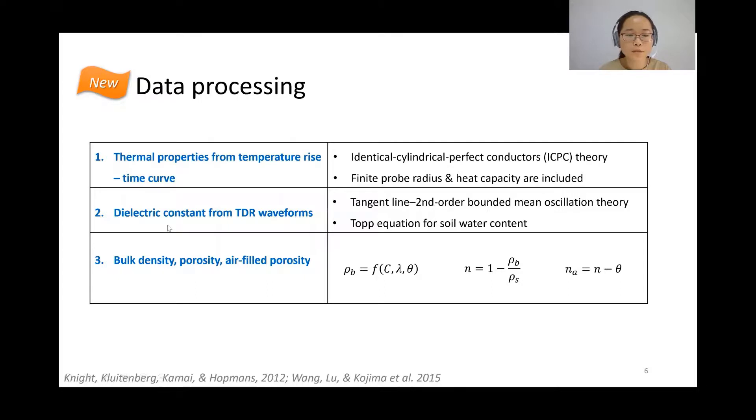We obtain the soil water content from Topp equation using the dielectric constant. And finally, soil bulk density can be obtained from these two measurements of soil thermal properties like soil heat capacity and the thermal conductivity as well as the TDR water content. Accordingly, soil porosity and air-filled porosity can be derived.